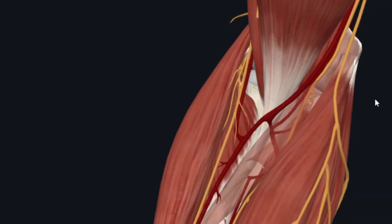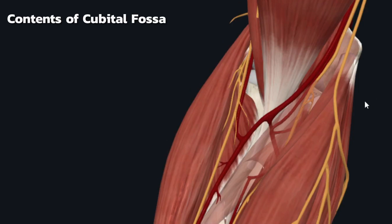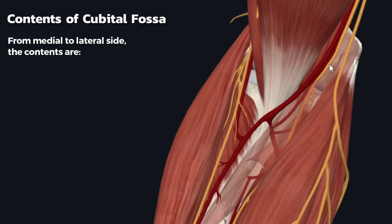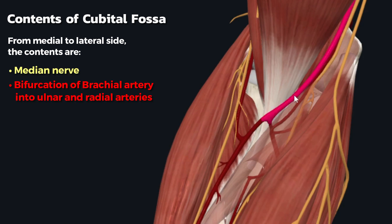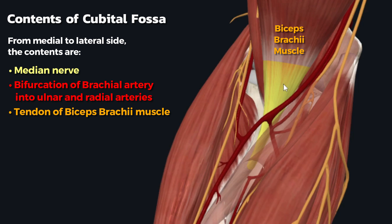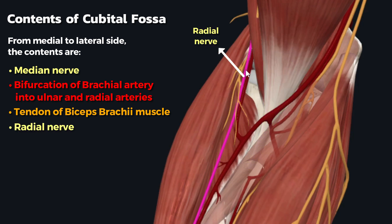Now let's talk about the contents of the cubital fossa. There are four major structures which pass through the cubital fossa, and we will discuss them from medial to lateral. From medial to lateral, these structures are: the median nerve, the bifurcation of the brachial artery into ulnar and radial arteries, the tendon of the biceps brachii muscle, and the radial nerve.